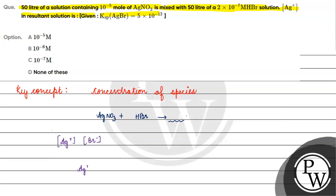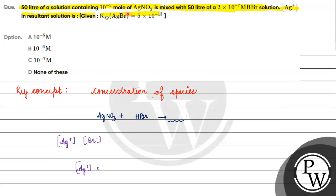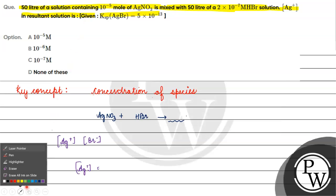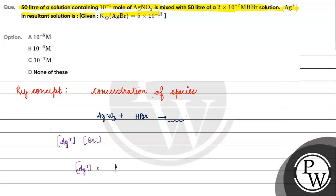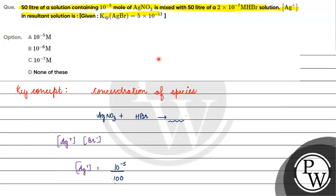Concentration of Ag⁺ will be equal to the number of moles of AgNO₃, which is 10 raised to the power minus 5, divided by the total volume of the solution when we mix both AgNO₃ and HBr. The total volume is 100 liters, so concentration of Ag⁺ equals 10 raised to the power minus 7 molar.